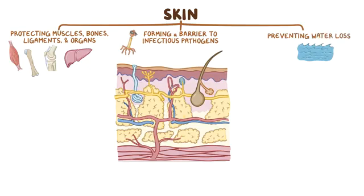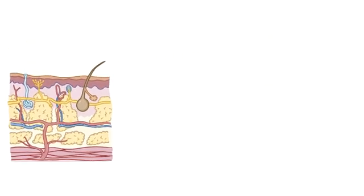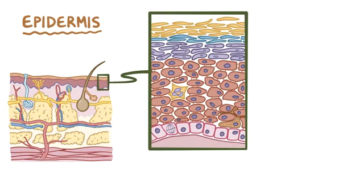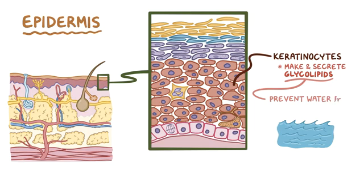The skin is divided into three layers: the epidermis, dermis, and hypodermis. The epidermis forms the thin outermost layer of skin, and it's made up of several layers of keratinocytes, which make and secrete glycolipids, which help to prevent water from easily seeping into and out of the body.